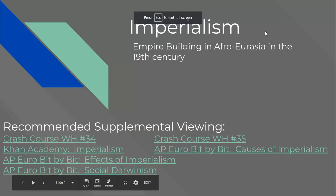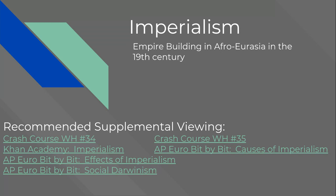Hi again everybody, back this time for Unit 20 on imperialism. A couple of things we're going to focus on: where does this new era of empire building in Africa and Asia in the 19th and 20th century come from, why it's different than previous examples of empire building — because empire building is nothing new, we've been talking about it since Persia, Rome, Egypt, and Mesopotamia — and we also want to compare it to European empire building in the 16th and 17th century in the Americas. Finally, we'll look at some of the effects of imperialism on the colonized people of Africa and Asia.